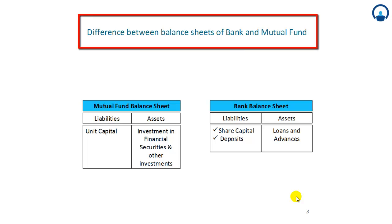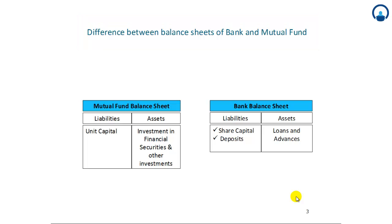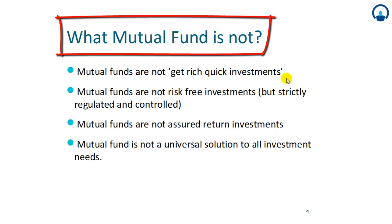Difference between the balance sheet of a bank and a mutual fund. A mutual fund balance sheet would look something like this: on the liability side, you would have the unit capital; on the assets side, you would have investments in financial securities and other investments. The bank balance sheet, on the other hand, will have liabilities comprising share capital and deposits, and assets having loans and advances. The key difference is that what is share capital in a bank is represented by units from the various unit holders in a mutual fund.